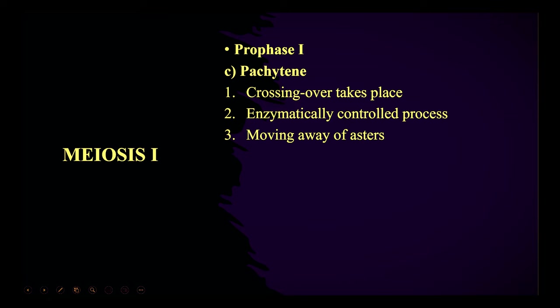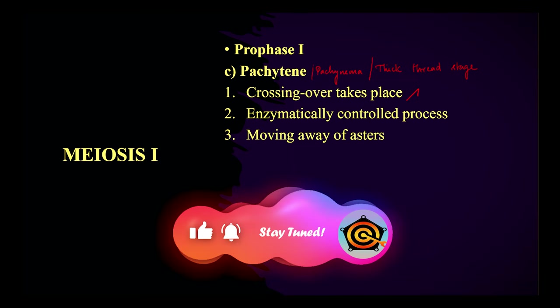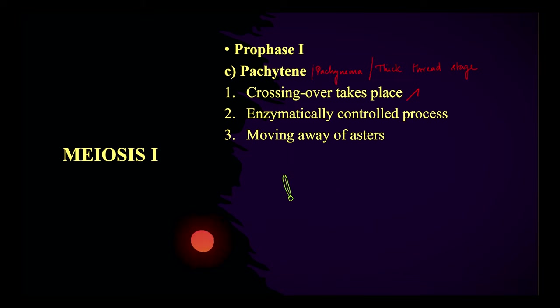The next phase is pachytene, also called pachynema or thick thread stage. Here crossing over is going to take place, which means exchange of genes. Both homologous chromosomes get attached for the exchange of genes — this is called crossing over. Crossing over is an enzymatically controlled process by an enzyme called recombinase enzyme.